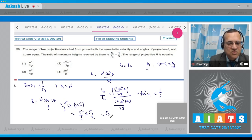So it is root 3 u square by 2g. Look at the option - option 2 is root 3 u square by 2g. Answer to this question is 2.